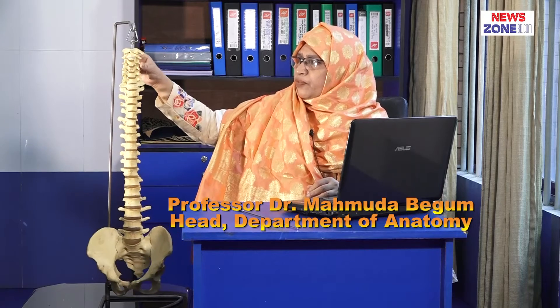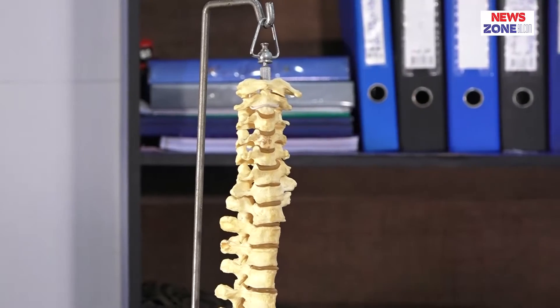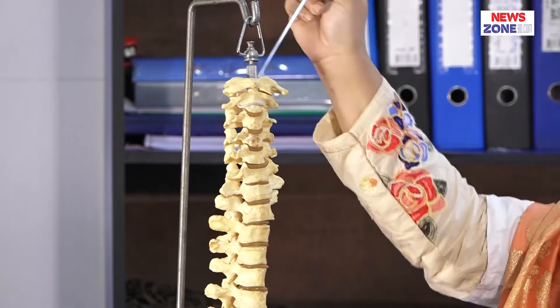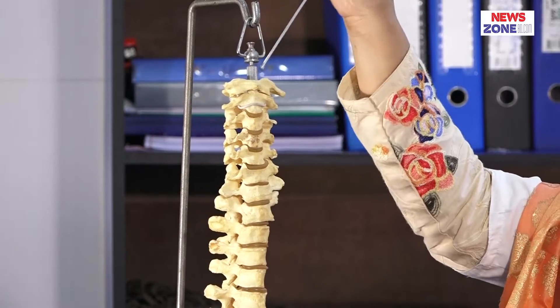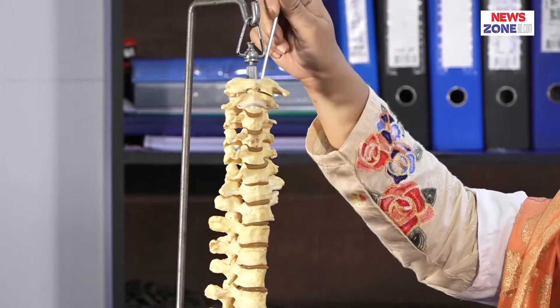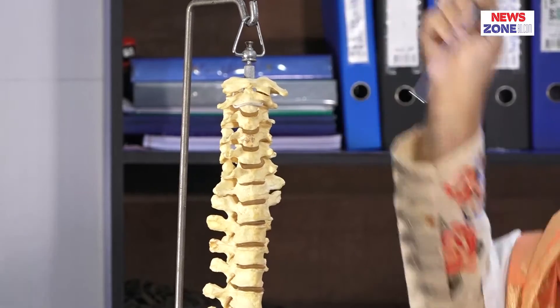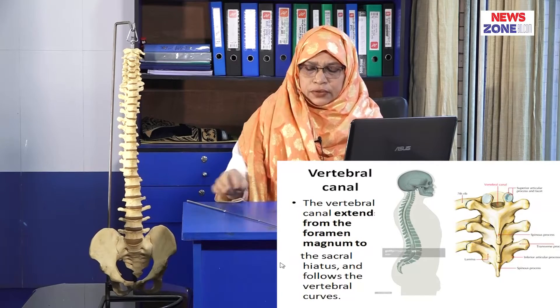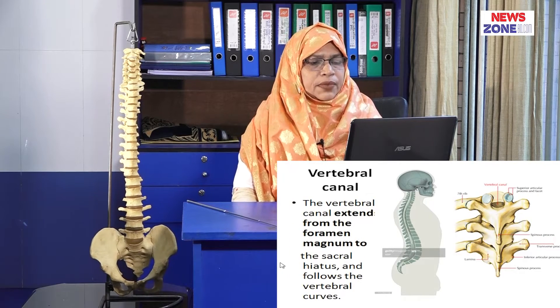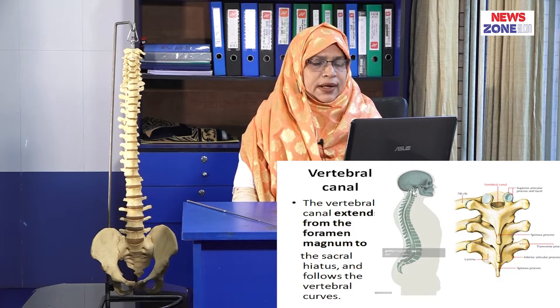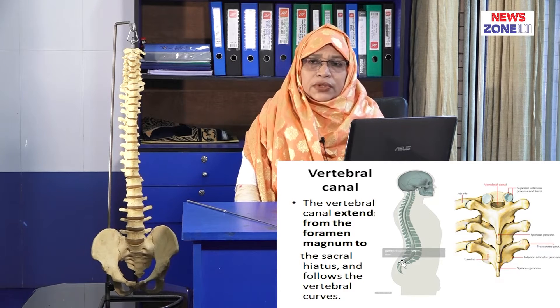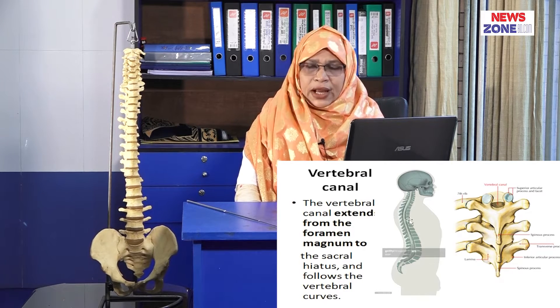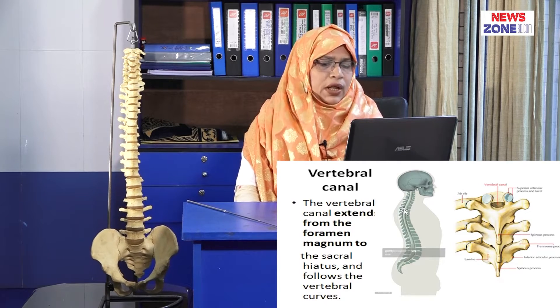Now, the vertebral canal — this canal is behind the body of the vertebra. This canal extends from the foramen magnum — the occipital foramen magnum — to the sacral hiatus. This vertebral canal follows the curvature of the vertebral column.